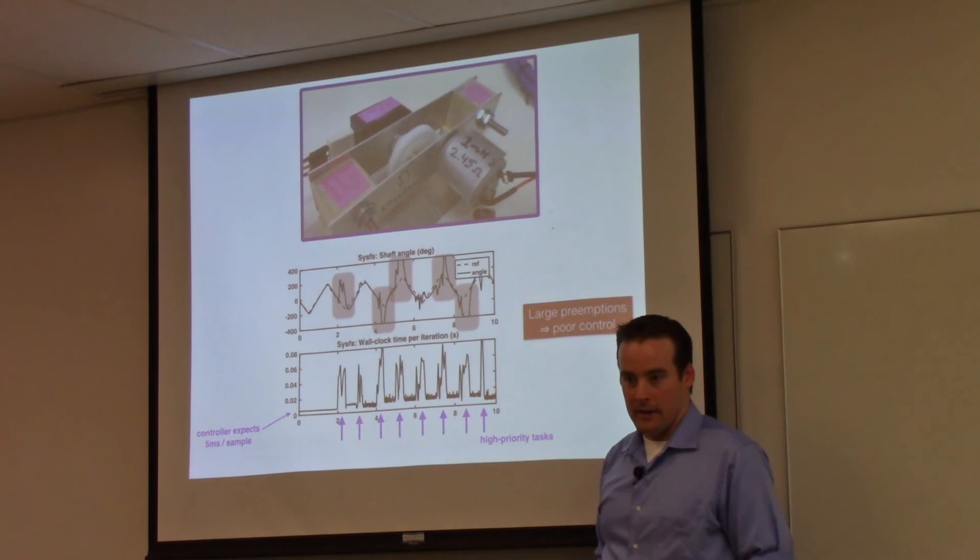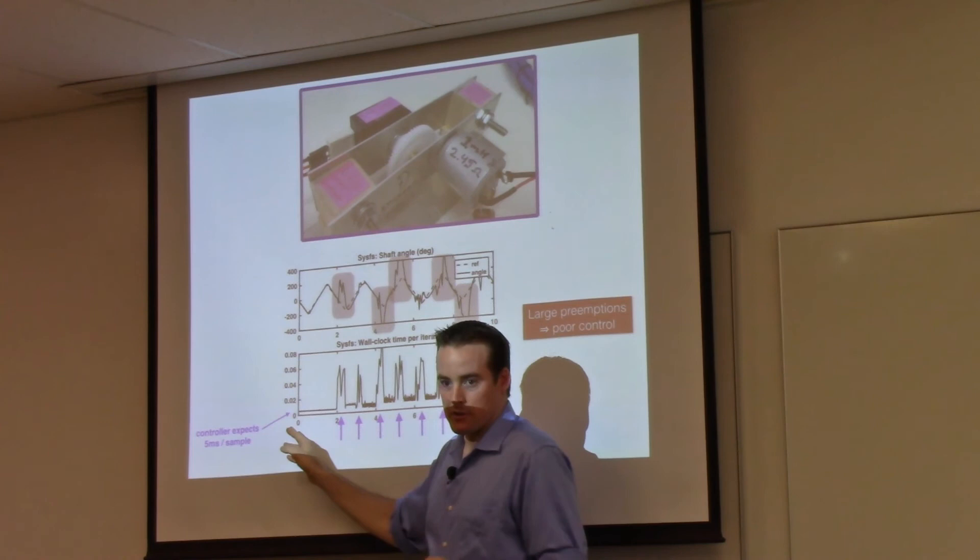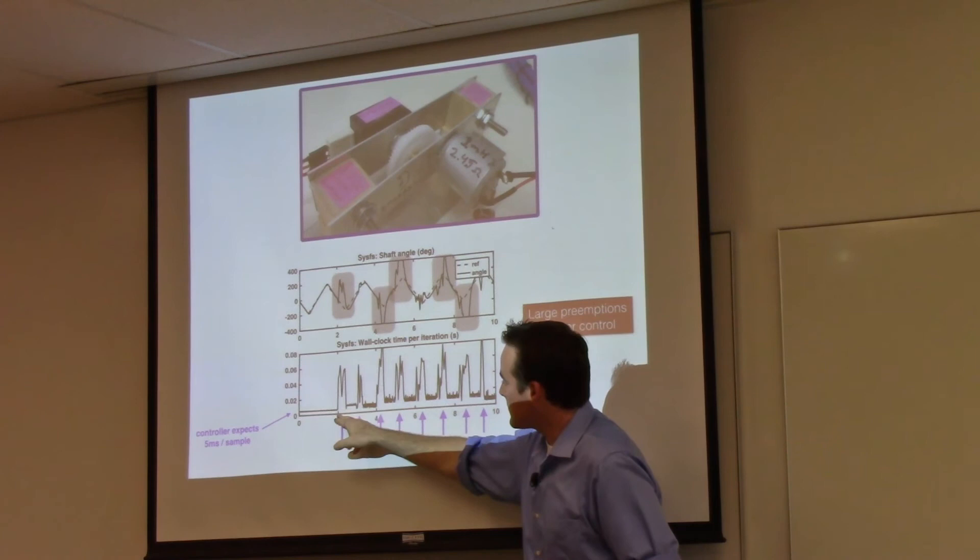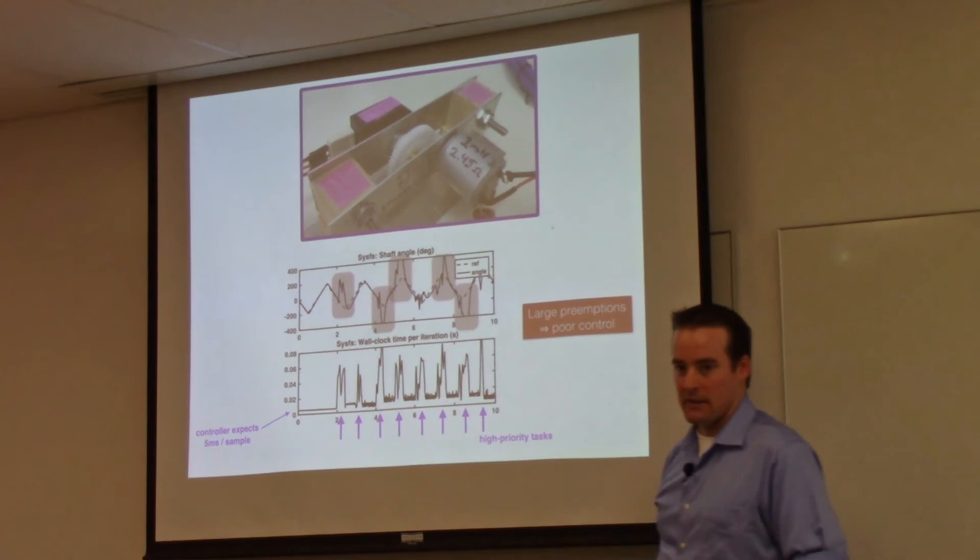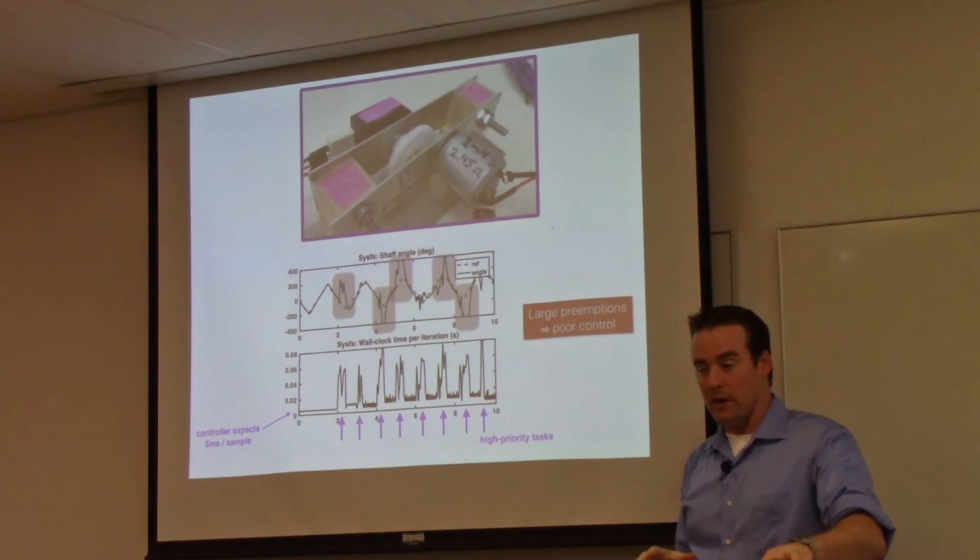The operating system has to divert CPU resources to these new high-priority tasks. As a result, this is the time in between when the control task gets to run. This is like some PID controller. The PID controller gains were chosen assuming that it gets to run every five milliseconds. But when these high-priority tasks come in, you can see that sometimes it doesn't get to run. There's like 50 milliseconds in between when the controller gets to run. So it does very poorly. It kind of goes crazy in here.